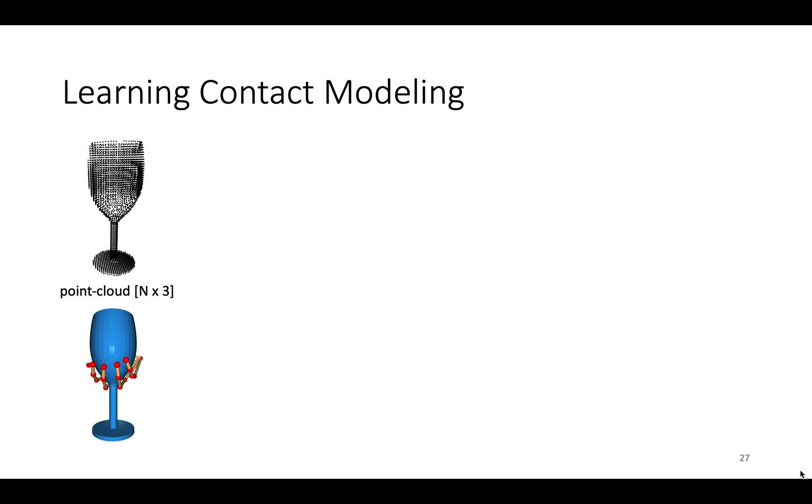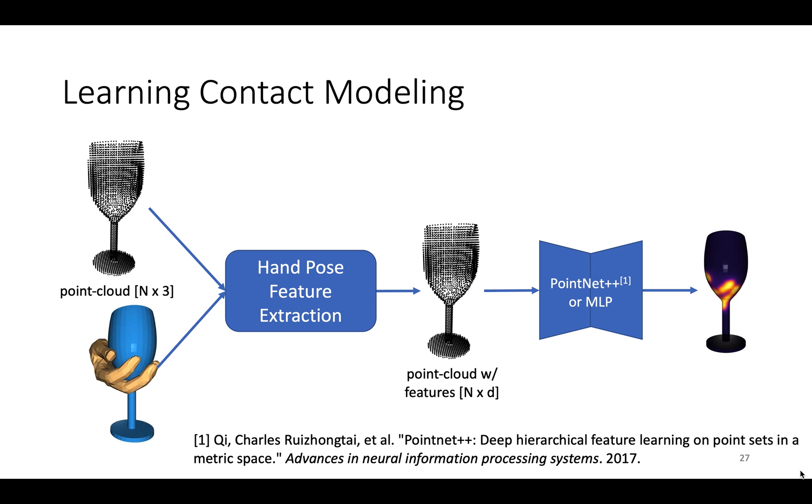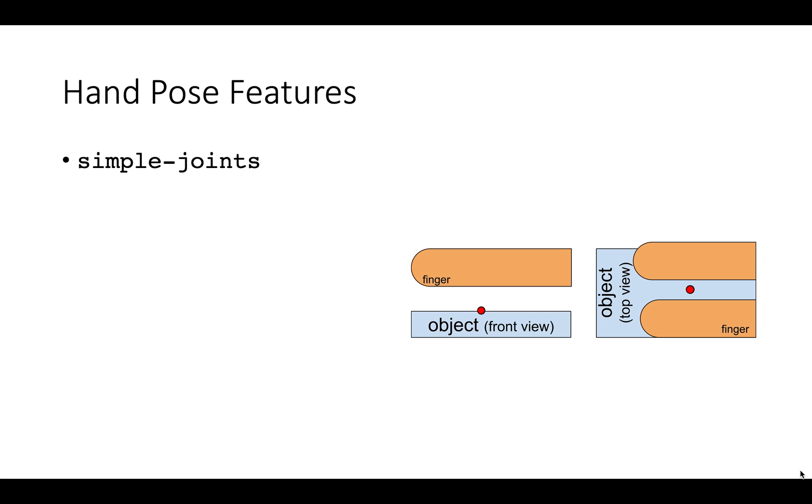Next, we used this data to learn contact models. Given the object point cloud and hand pose, we extracted hand pose features for each object point and trained a neural network to predict contact values for each object point. We investigated four kinds of hand pose features: Simple joints directly used 3D hand joint values. Relative joints used vectors from object points to hand joints. Skeleton features used vectors from object points to the closest point on each bone line segment. And mesh features used vectors to the closest point on the hand mesh.